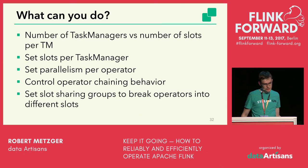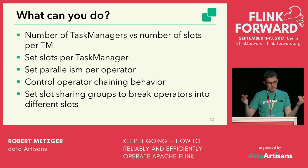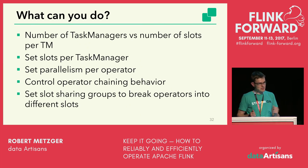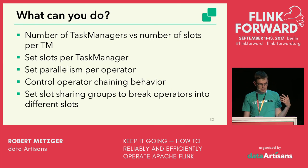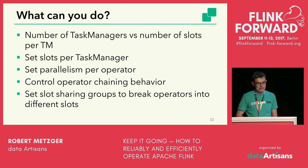Configuration options include: number of task managers (deploy multiple per machine or use fat task managers with many slots), number of slots per task manager, parallelism per operator (global or per-operator, e.g., sink running at parallelism one), and operator chaining behavior (you can disable chaining entirely, which makes metrics and monitoring easier since you see metrics for each task individually).